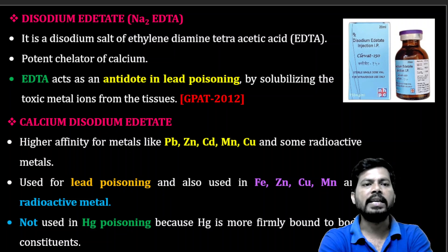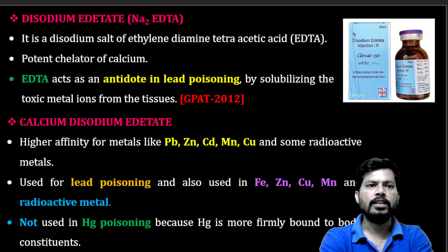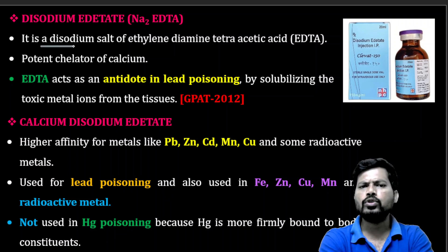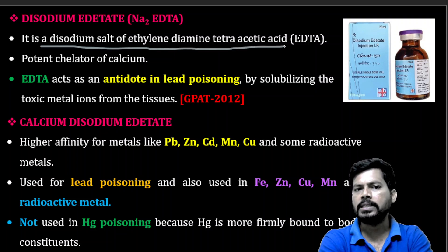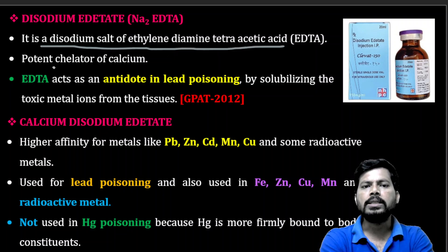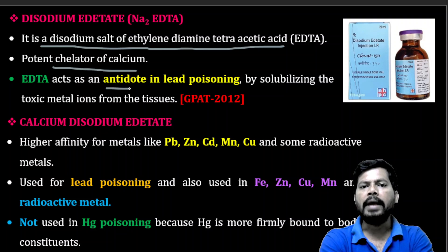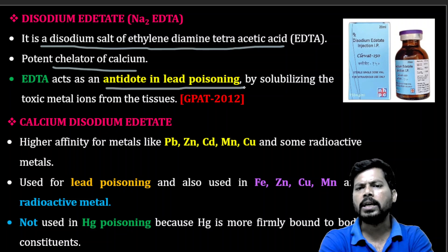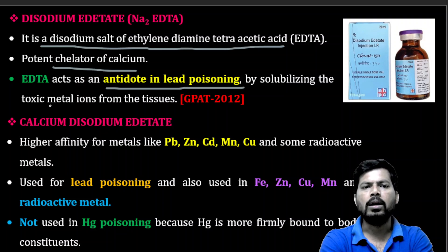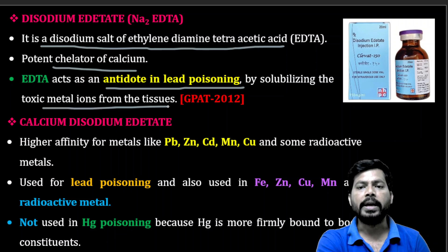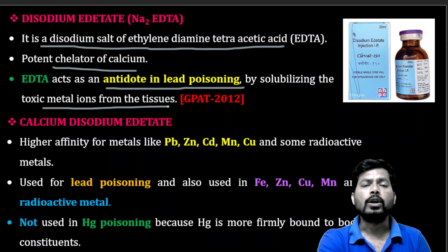Disodium EDTA is the disodium salt of ethylenediamine tetraacetic acid. It is a potent chelator of calcium and acts as an antidote in lead poisoning by solubilizing the toxic metal ion from tissues.